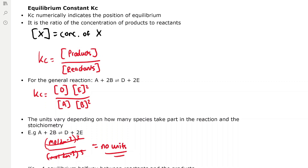The equilibrium constant Kc numerically indicates the position of equilibrium. It is the ratio of the concentrations of the products to the reactants. Square brackets indicate concentration. In Kc expressions, the concentration of products is divided by the concentration of reactants, each raised to the power of their stoichiometric coefficient. For example, in A + 2B → D + 2E, Kc = [D][E]² / ([A][B]²), because the balancing numbers become powers.